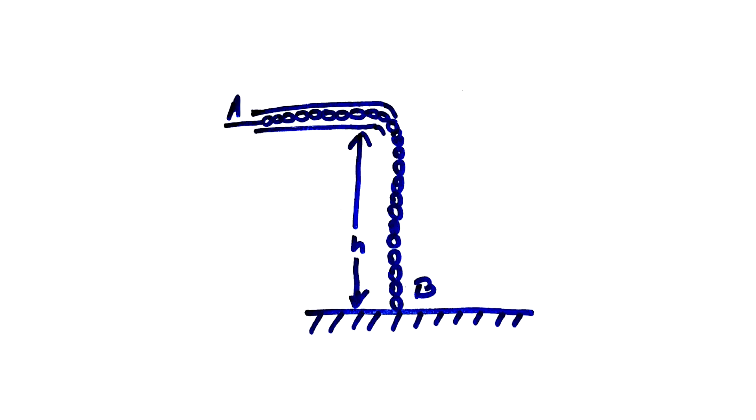Now this is the schematic diagram of our problem. As mentioned in the statement, a pipe is placed at a height H from the surface and a chain is hanging from it, and the end point of the chain is touching the ground.